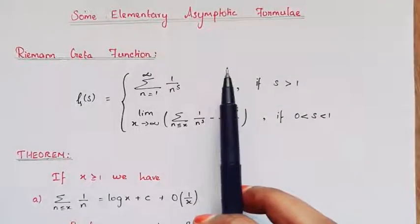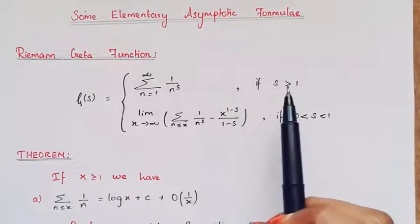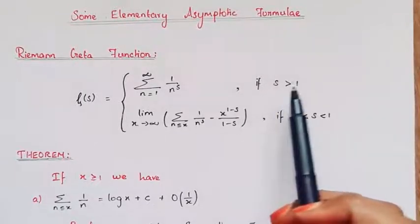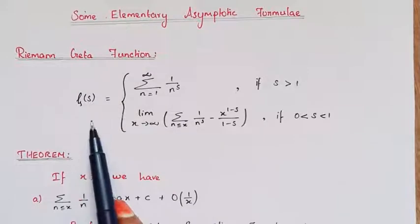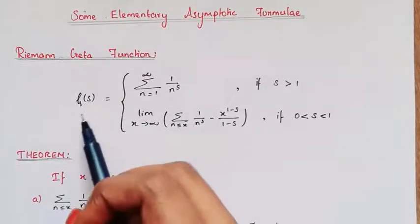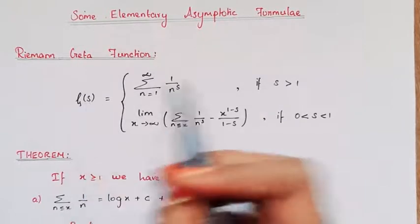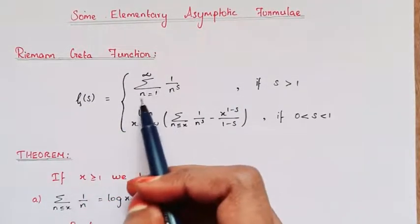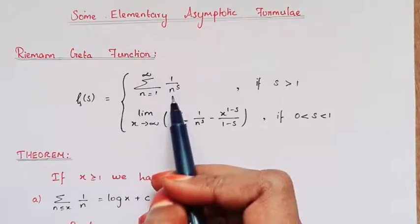Hello everyone. In this video we will learn some elementary asymptotic formulae. First, we see what the Riemann Zeta function is. The Riemann Zeta function is defined as zeta of s. If s is greater than 1, then zeta of s is equal to the sum over n equal to 1 to infinity of 1 by n power s.